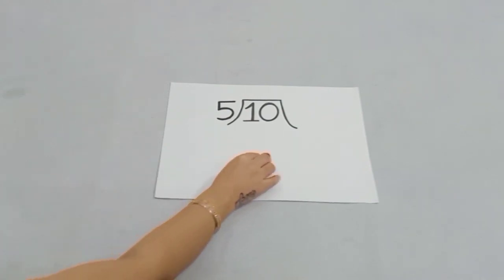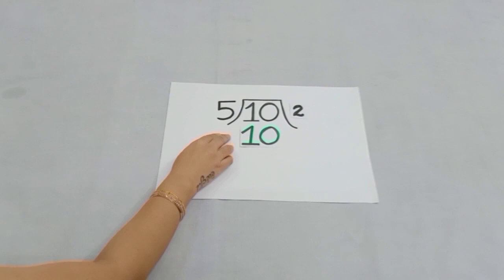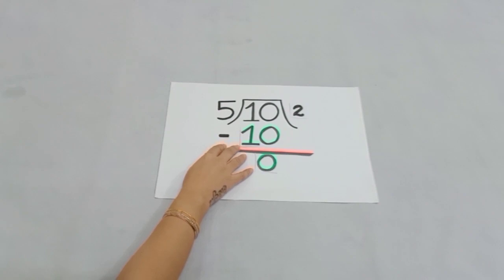Now we will do subtraction, and after subtracting 10 from 10 we get zero.